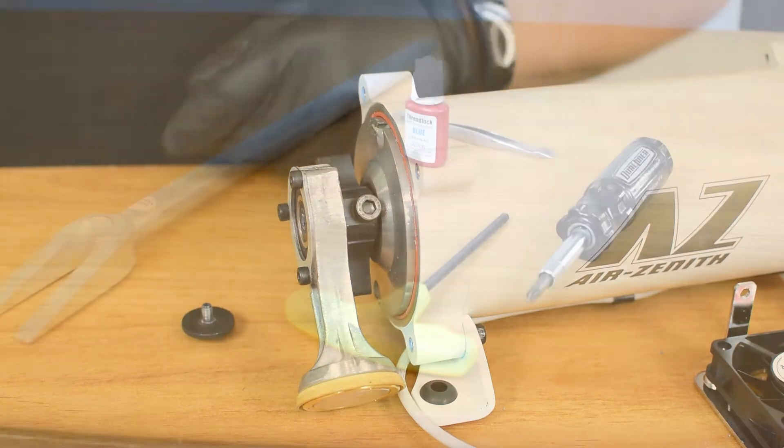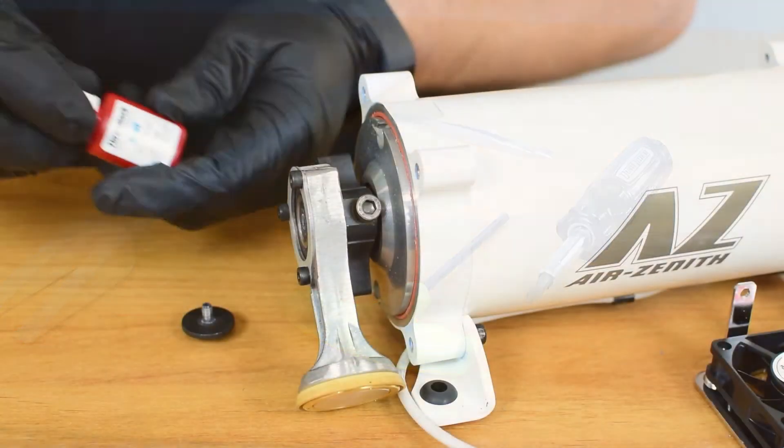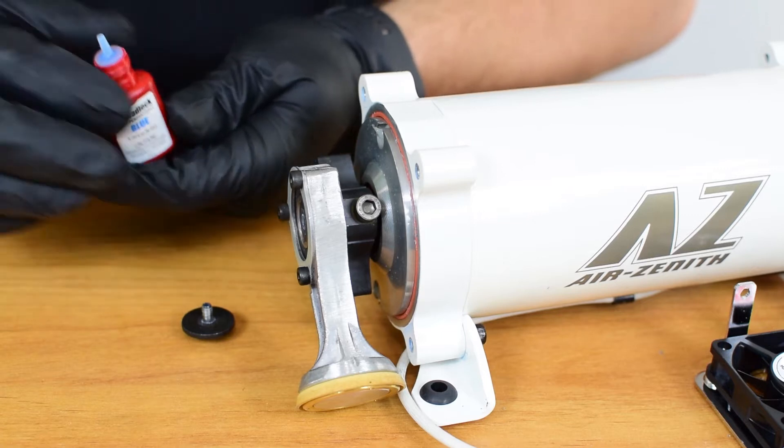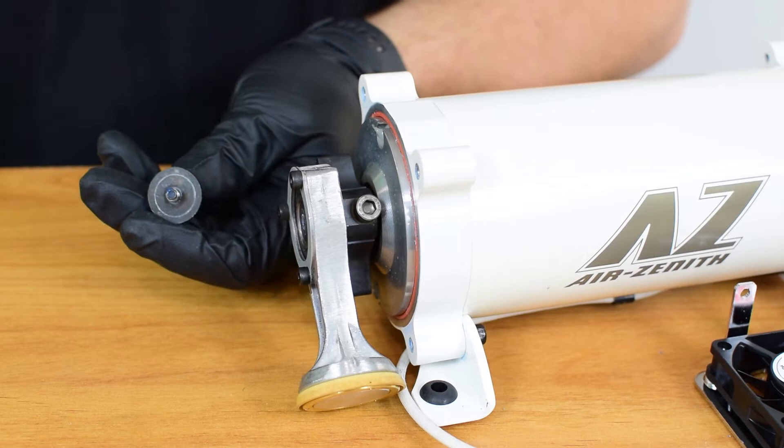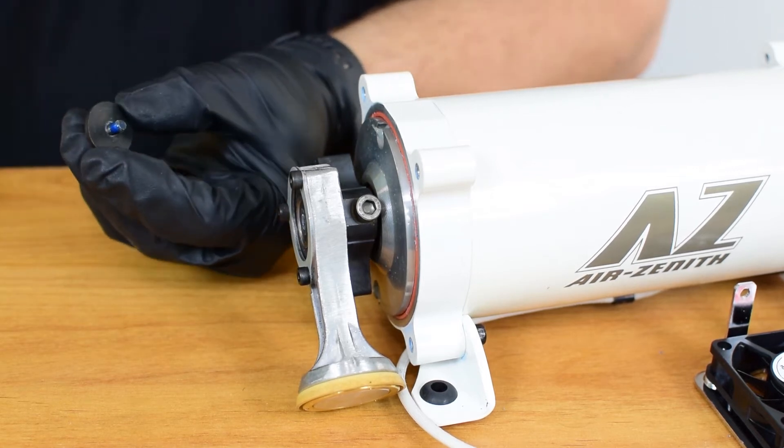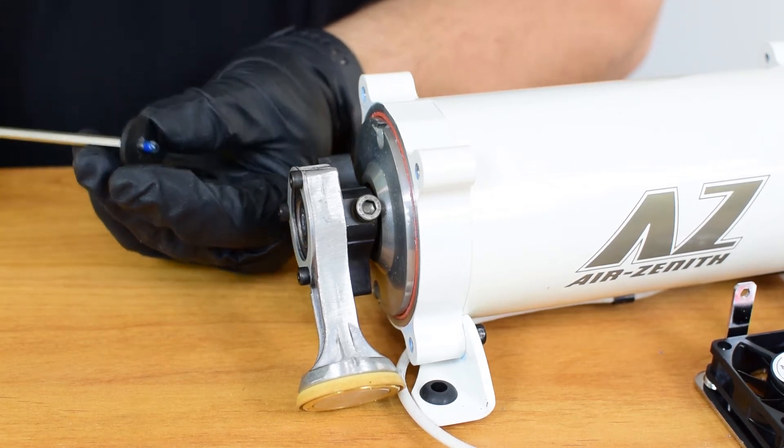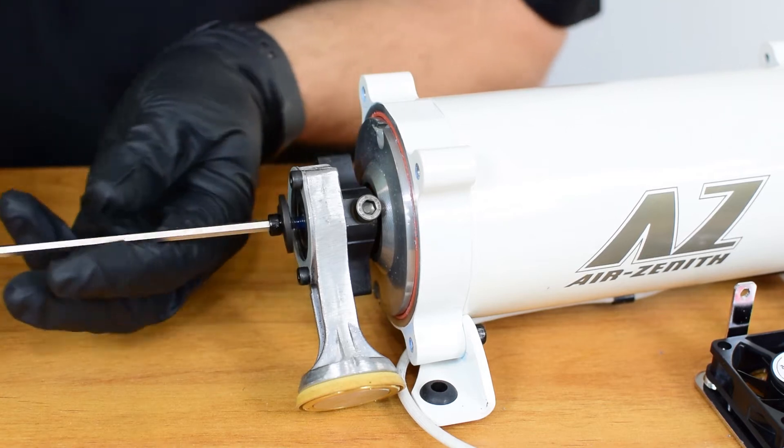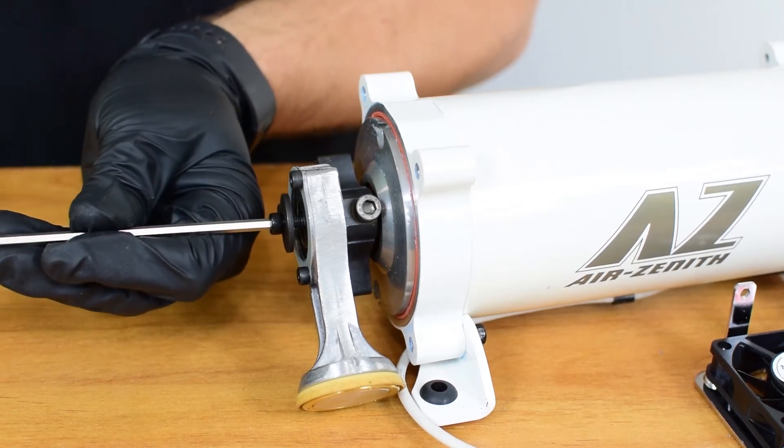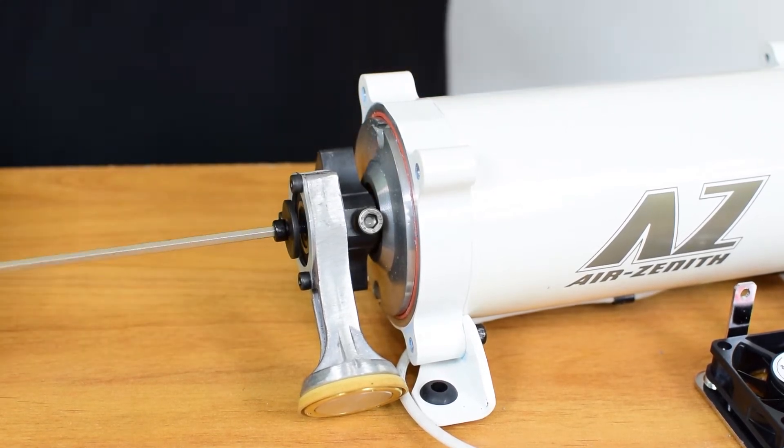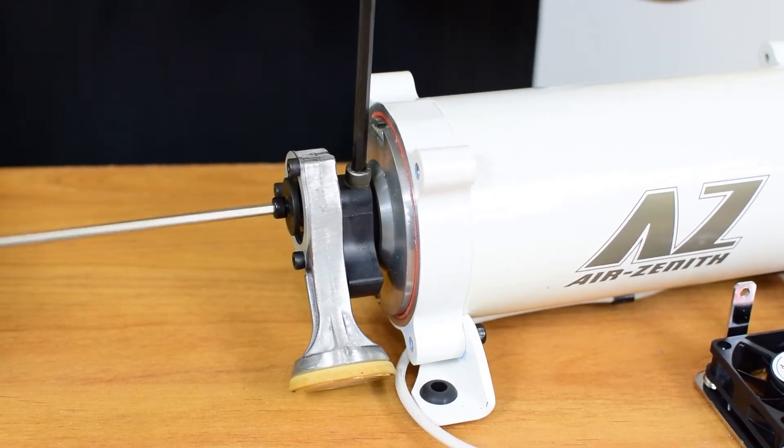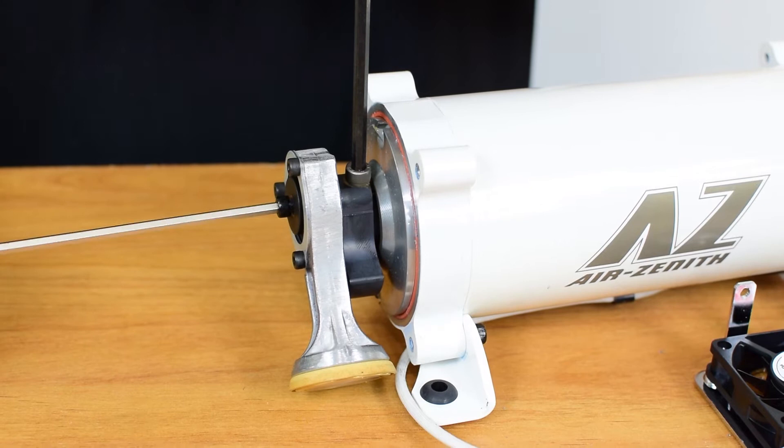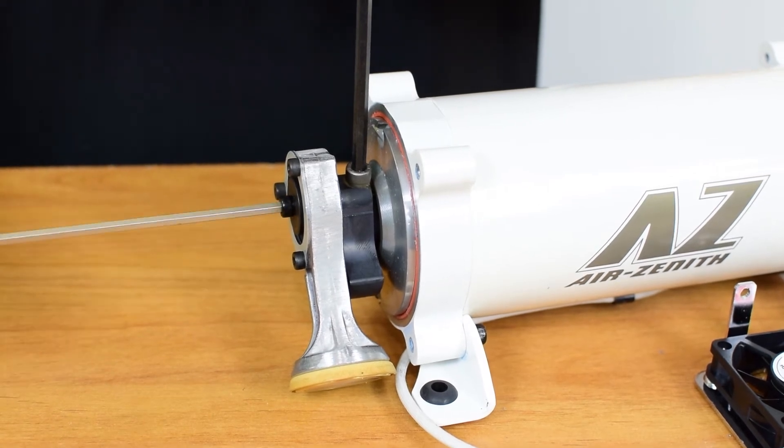Now grab your screw and your blue loctite. You're going to put a small dab of blue loctite onto the retaining screw. This will keep it from vibrating loose. A little bit here goes a long way. And you can go ahead and tighten the screw back into the front of the compressor. Note you'll want this one pretty tight. You can use your second larger wrench to retain the counterweight while you're tightening.